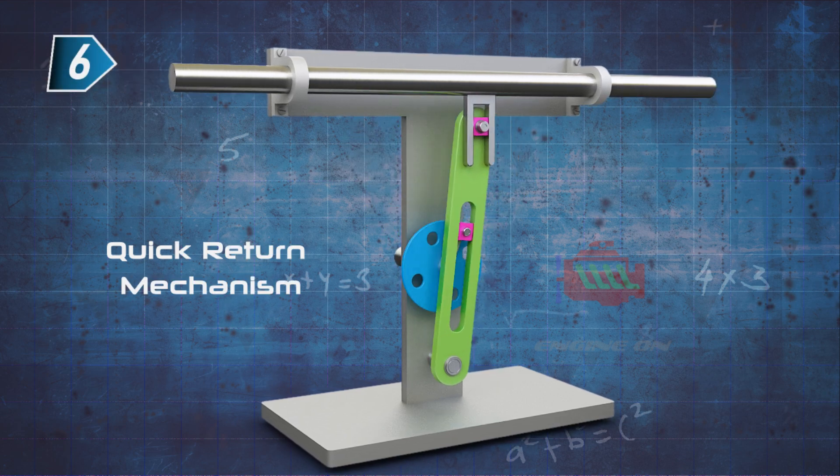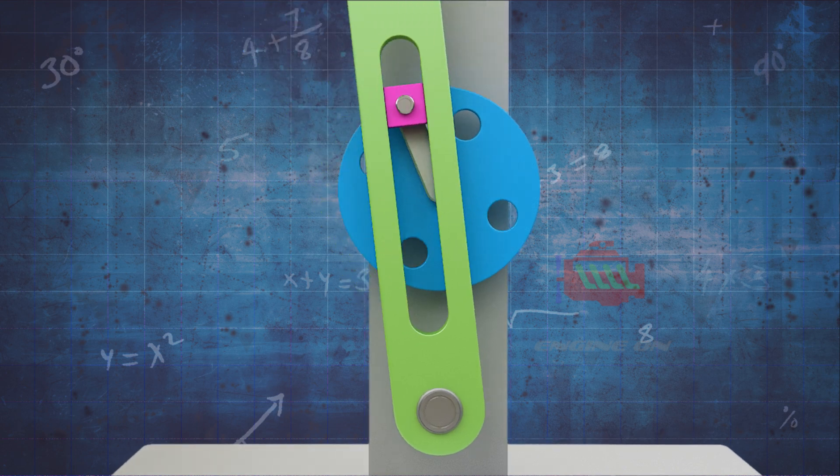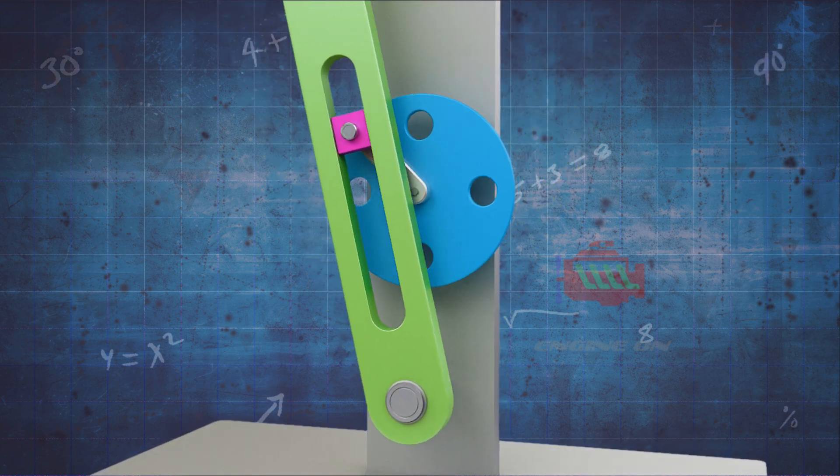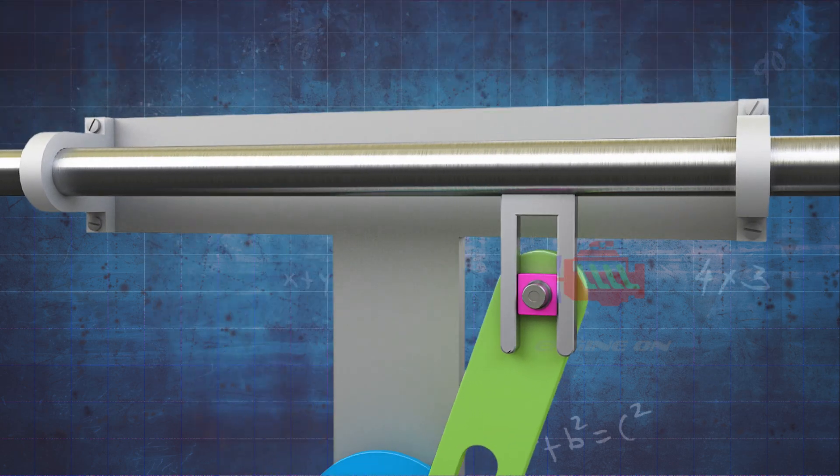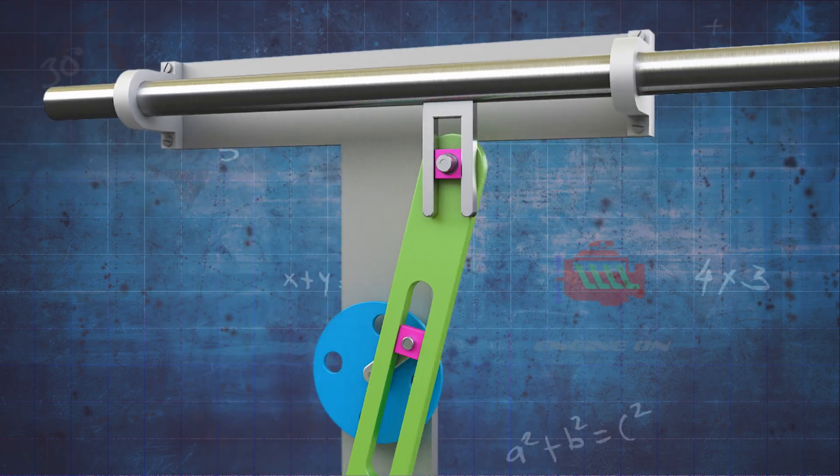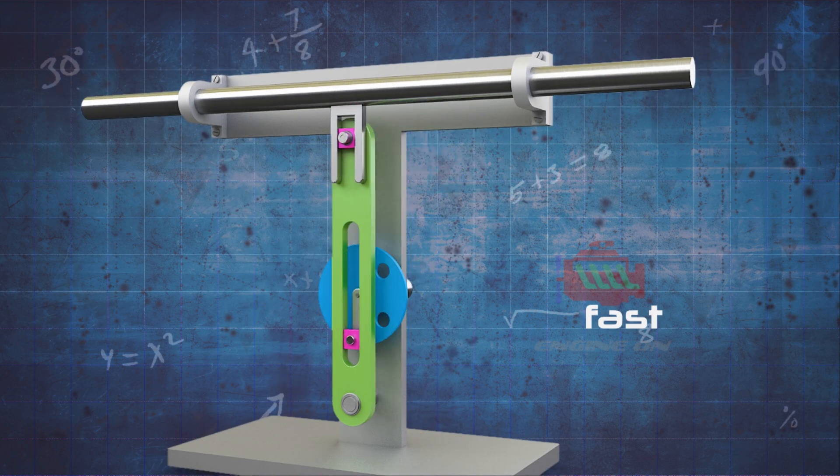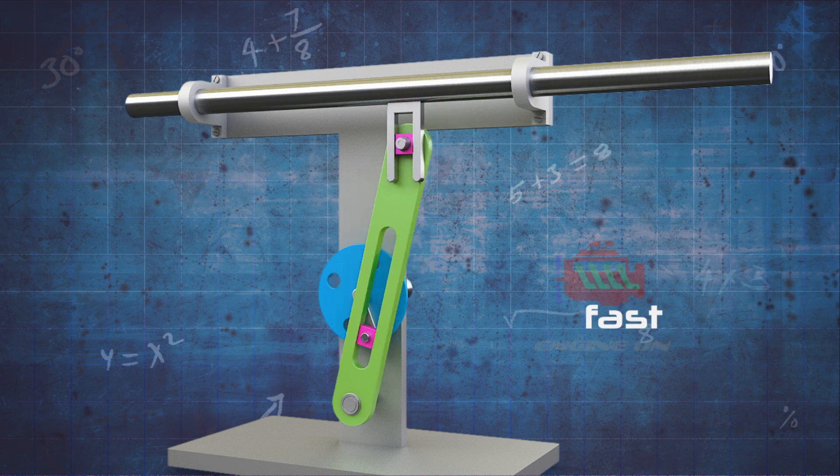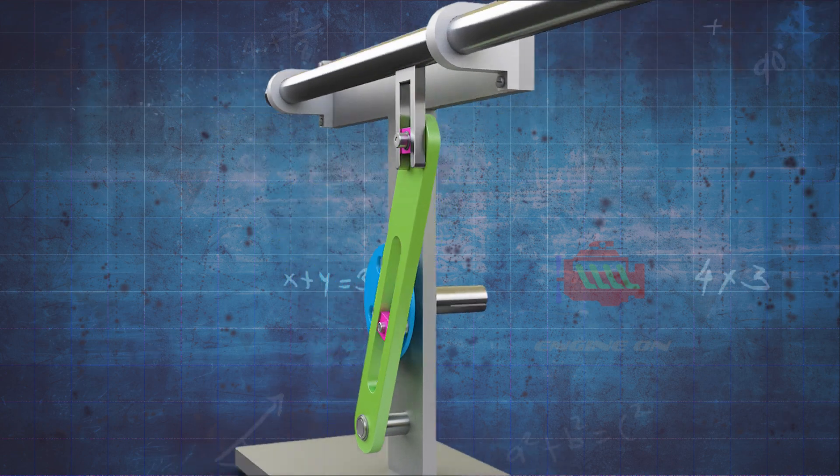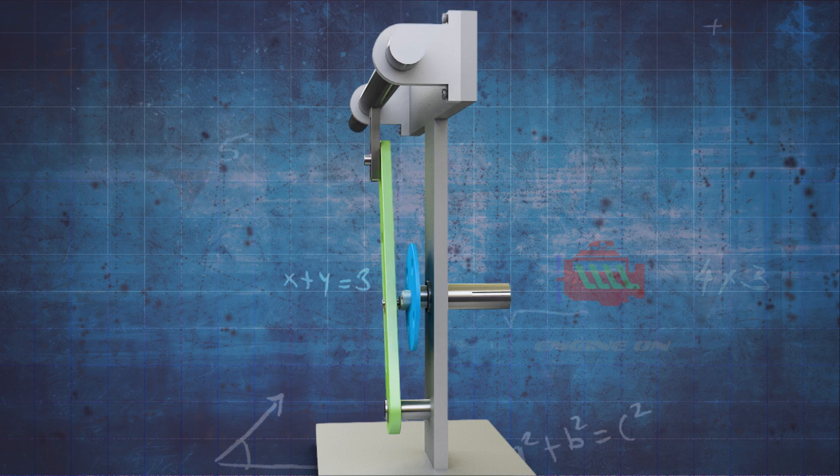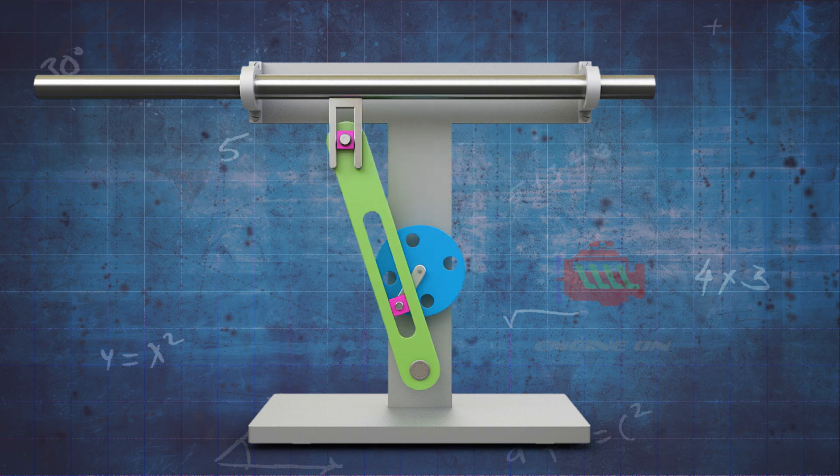Quick return mechanism is an apparatus to produce a reciprocating motion in which the time taken for travel in one direction is less than in the other. It is driven by a circular motion source and uses a system of links and sliding joints. Quick return is a common feature of tools in which the action is performed in only one direction of the stroke, such as shapers and powered saws, because it allows less time to be spent on returning the tool to its initial position.